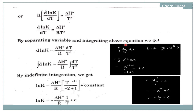Now what we will do is separate variables and integrate the above equation. The variables here are: d(ln K) on one side — since ΔH°/R is a constant, it is taken outside the integration sign — and dt/T² is the temperature-dependent variable. Constants are taken outside the sign of integration.